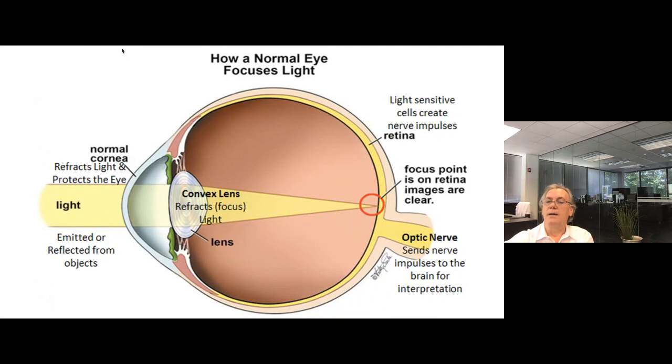So, for example, when light strikes an apple, the green and blue light waves are absorbed by the apple and it is reflected only the red light wave.